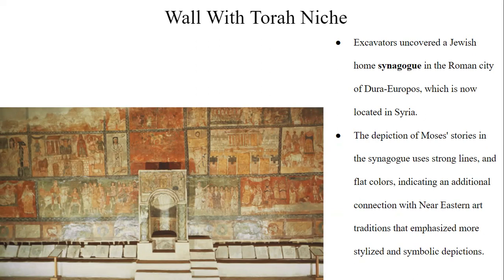The Torah niche, an important part of the artwork, contained the Torah scrolls — the core of Jewish religious life. Its representation in this context highlights the sacred status as well as its crucial function in community worship. This design featured turning a piece of a home into a holy space, highlighting the Torah's role in directing everyday life and spiritual practice for Jewish people.